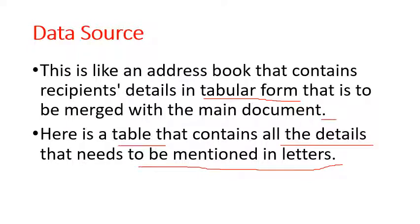The data source contains a table with all details that need to be mentioned in the letters. For example, if we are sending a letter to 10 or 12 people, the data source will have their name, address, phone number, mobile number, pin code, and city. Once the main document and data source are prepared and merged, our final document is ready.